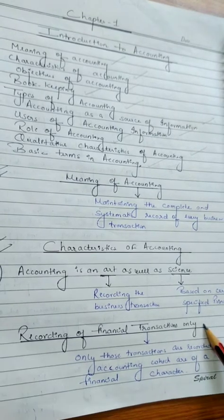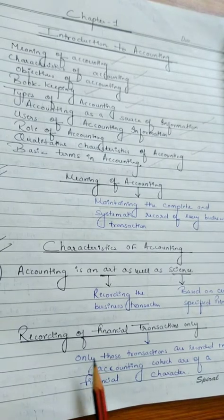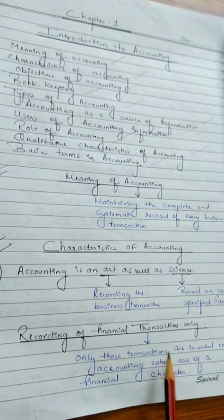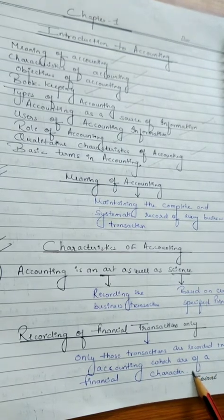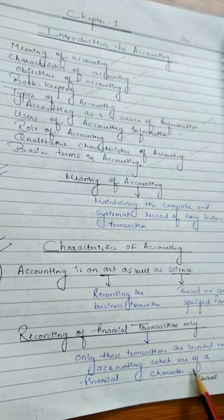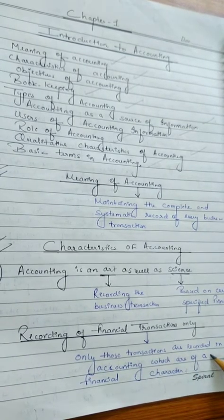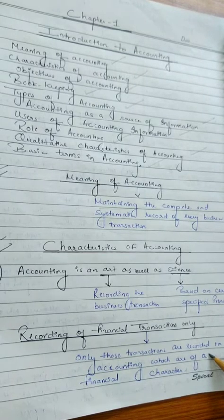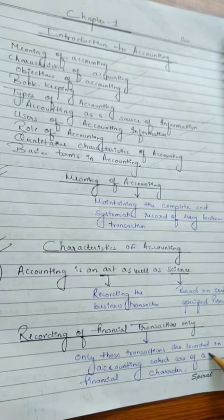Moving on to the next characteristic: recording of financial transactions only. Only those transactions are recorded in accounting which are of a financial character. Sirf wahi transactions books of account mein record honge jo financial character ke honge. Although there are many transactions in the business which are very important but cannot be measured in terms of money, such transactions will not be recorded.